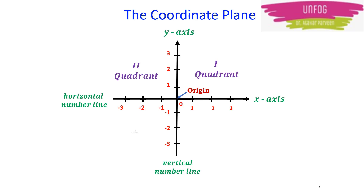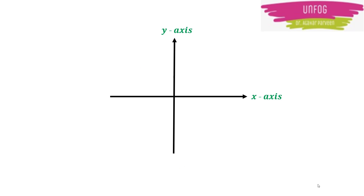We have the first, second, third, and fourth quadrants respectively in a coordinate system. We can plot a point on the Cartesian plane as an ordered pair (x, y). The point is the intersection of lines coming from the x-axis and y-axis, which are perpendicular. The value of y is the distance from the origin to the point on the y-axis, and the value of x is the distance from the origin to the point on the x-axis.